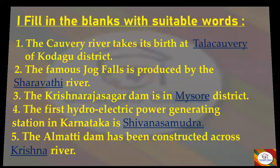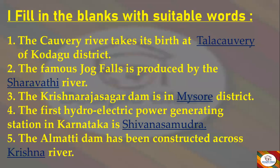First main section: Fill in the Blanks with suitable words. Question 1: The Kaveri River takes its birth at _____ of Kodagu district. Answer: Talakaveri. Question 2: The famous Jog Falls is produced by the _____ river. Answer: Sharavati.